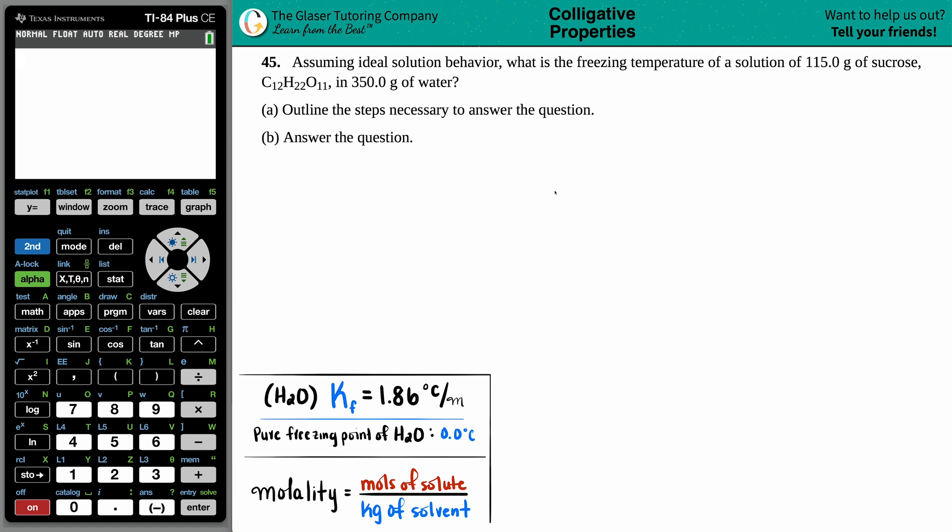Number 45. Assuming ideal solution behavior, what is the freezing temperature of a solution of 115 grams of sucrose, which is C12H22O11, and 350.0 grams of water? We need to outline the steps necessary to answer the question, and then we must answer it.